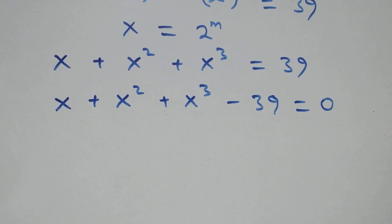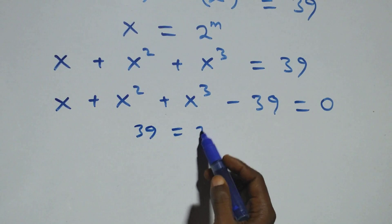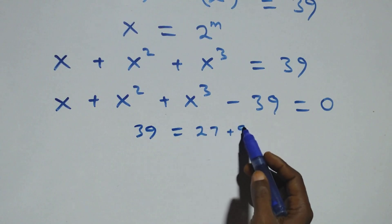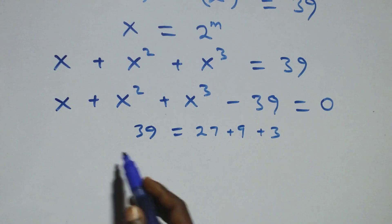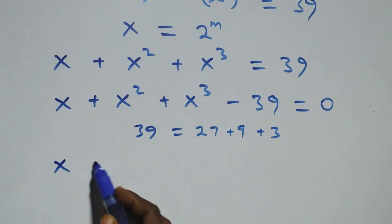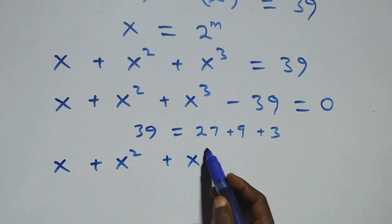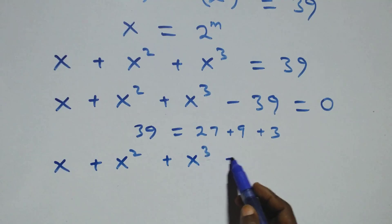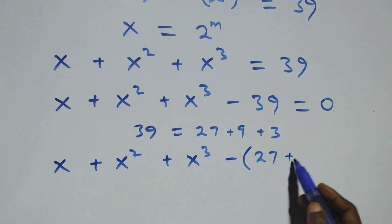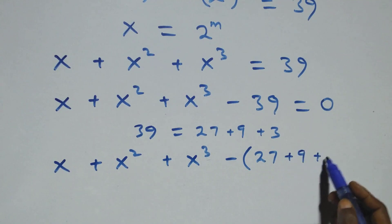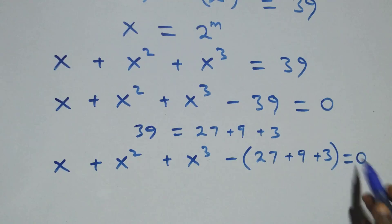Then here we can express 39 as 27 plus 9 plus 3. Now this equation becomes x plus x squared plus x cubed minus, in bracket, 27 plus 9 plus 3, close bracket, equals to 0 here.